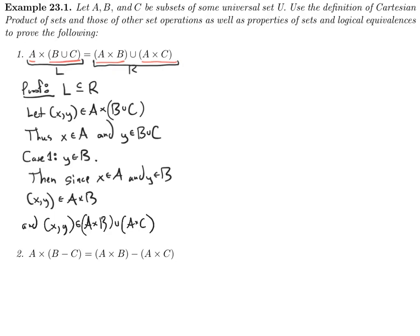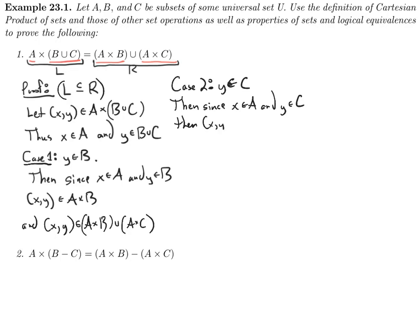Let's do case two. Case two: let Y be an element of C. Then since X is an element of A and Y is an element of C, X, Y is an element of A cross B union A cross C. So we have in both cases, if we start off with X, Y in A cross B union C, we have that it's an element of A cross B union A cross C. So the first direction is done.